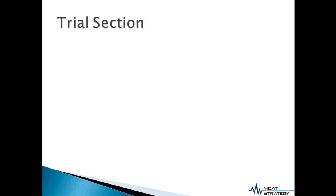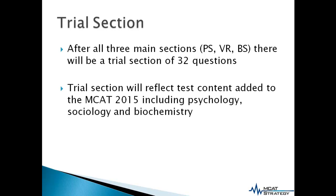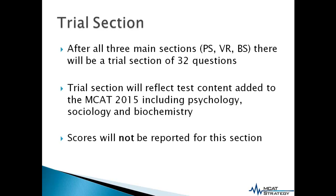I wanted to discuss the trial section a little bit further. It will follow the three main sections — physical sciences, verbal reasoning, and biological sciences — and the trial section will consist of 32 questions. The trial section will reflect test content that is being added to the MCAT 2015 exam and includes questions related to psychology, sociology, and biochemistry. It is important to note that scores on this section will not be reported, so you do not need to worry about your performance.